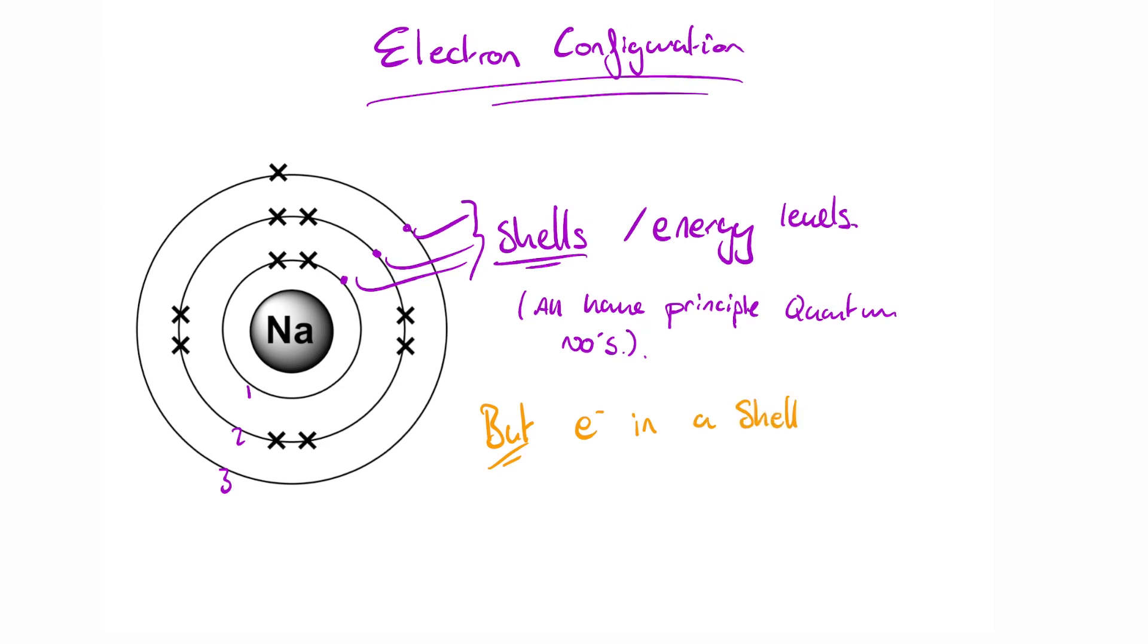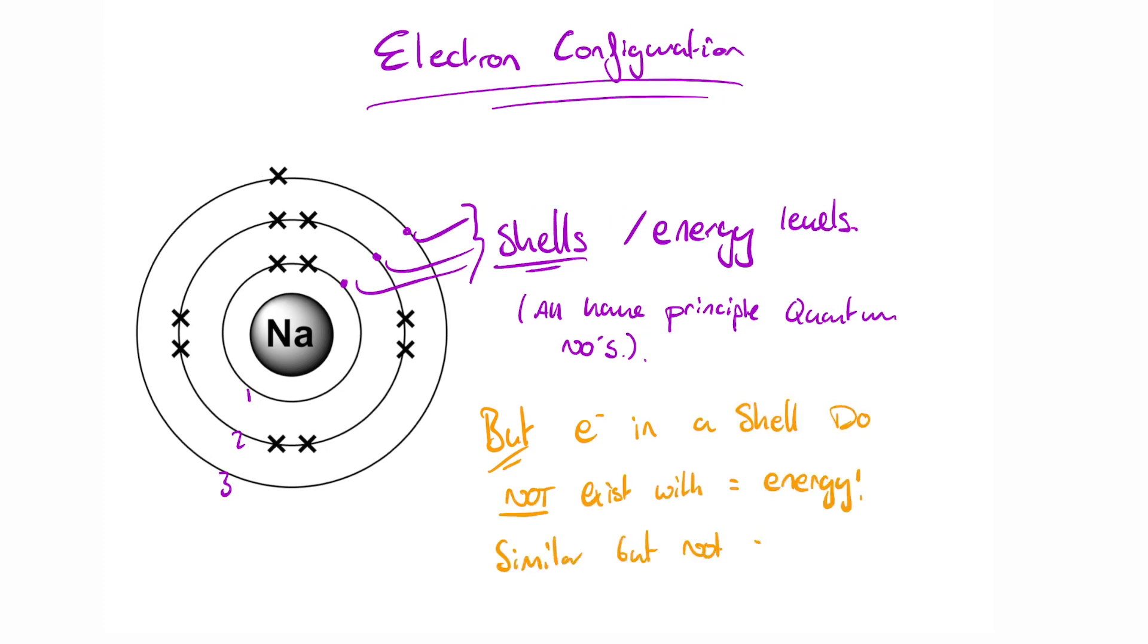Inside these shells, it's been proven that electrons don't have the same energies and if this difference in energy state wasn't clarified, it would just be assumed that everything in energy level 1 is the same, everything in 2 is the same, everything in 3 is the same and everything in 4 is the same. But that is not the case.